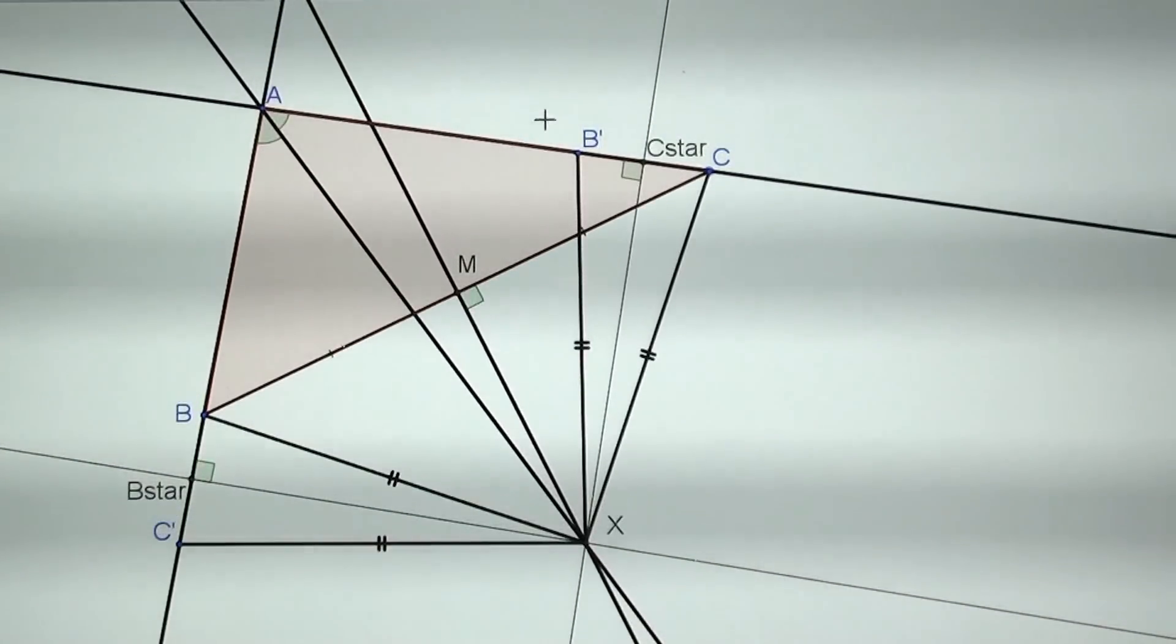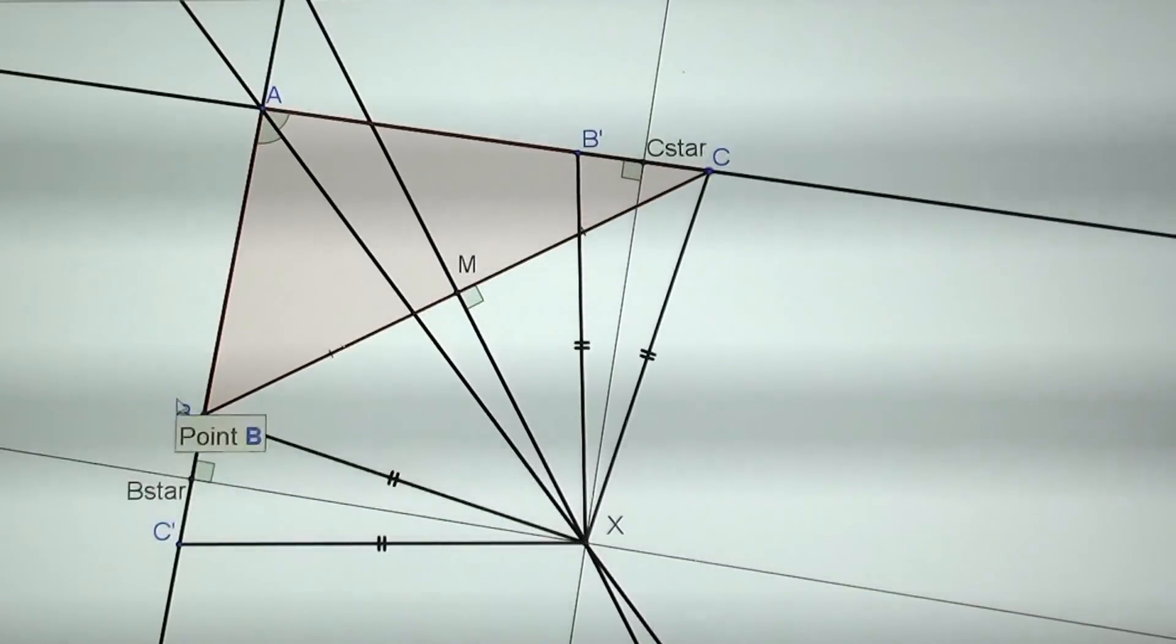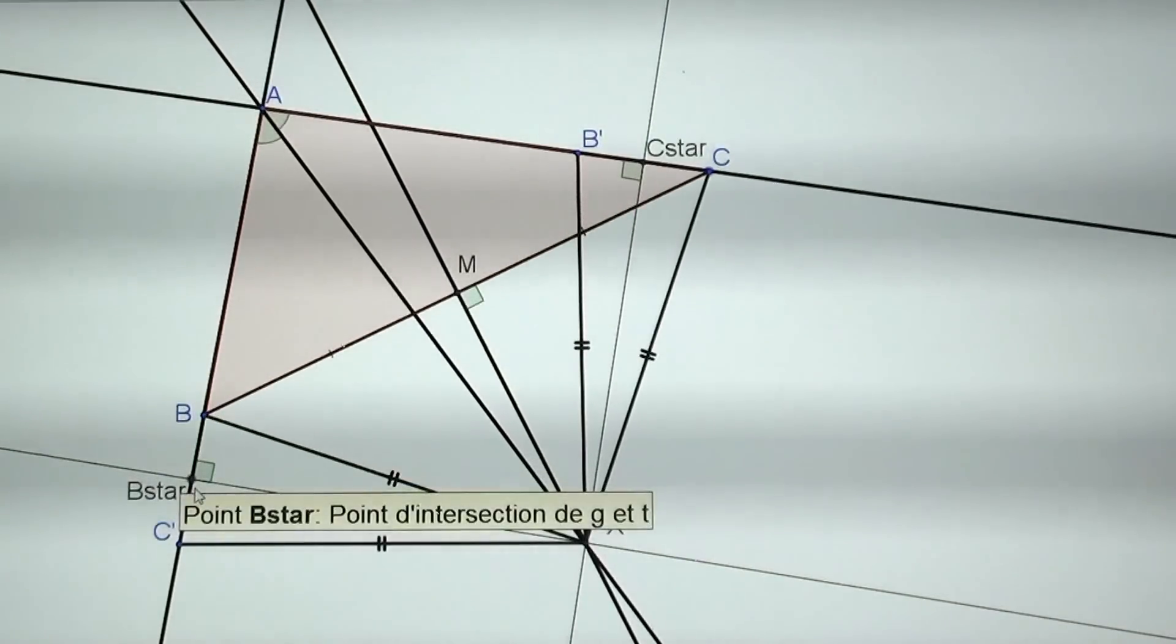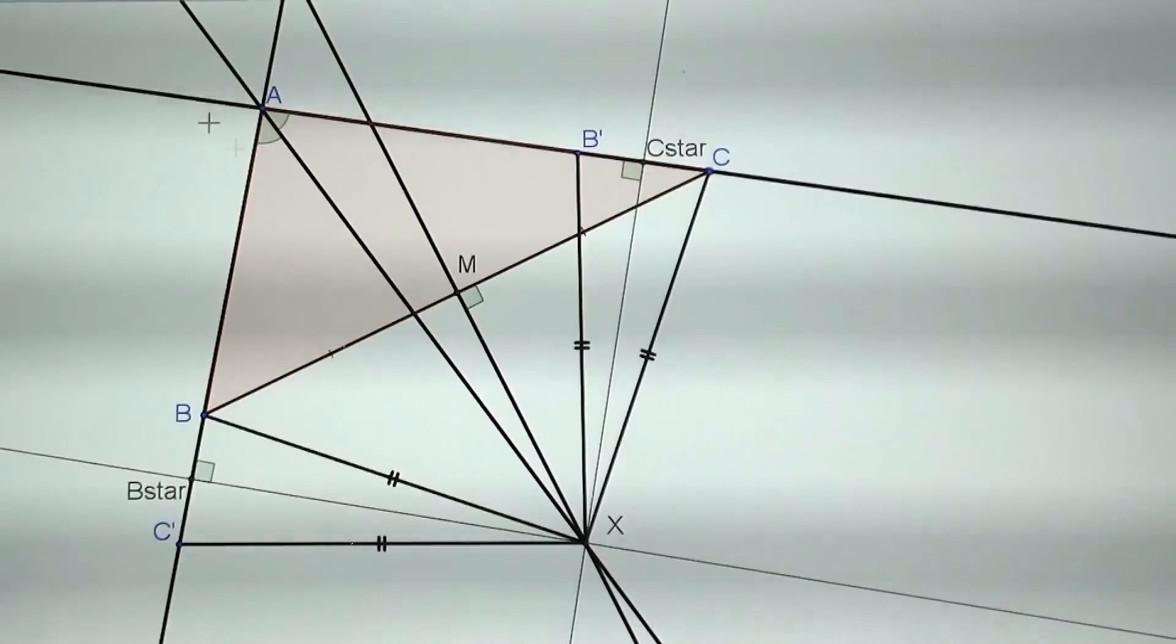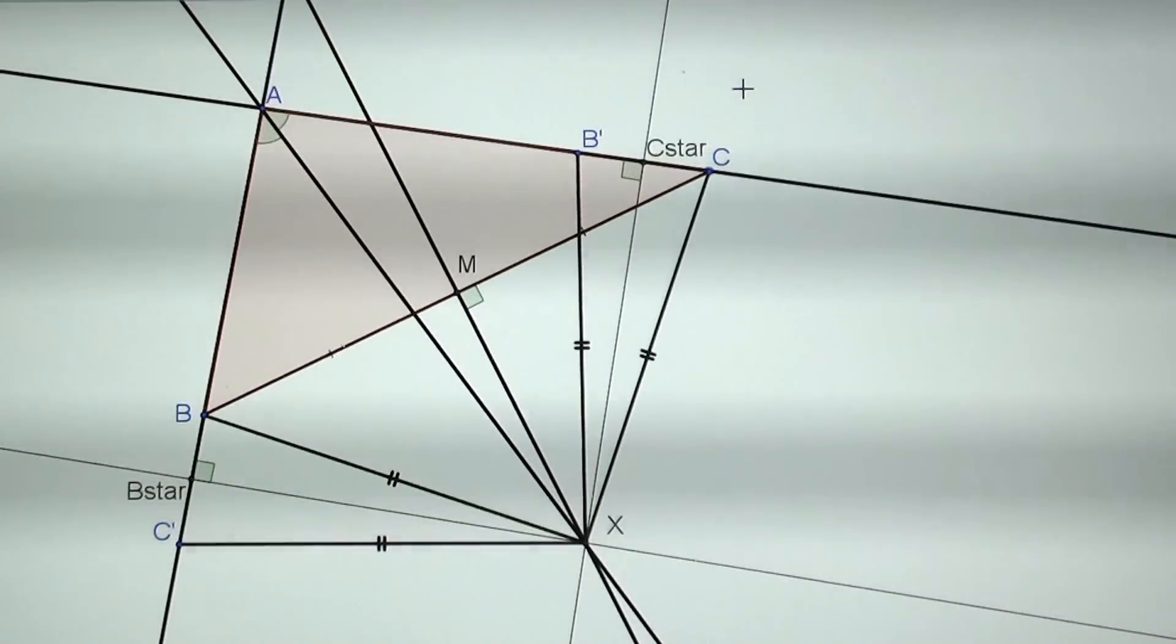So the last step of the proof is saying that since ABC star and C, and AB star and B are not in the same order, it is true to say that AB equals AB star minus BB star. But if you check the other side you have AC which is not equal to AC star minus CC star. Actually AC star is equal to AC minus CC star. So the equations that are given in Numberphile are wrong.